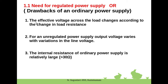To conclude, there are three main drawbacks of an ordinary unregulated power supply: first, the effective voltage across the load changes with changes in load resistance; second, the output voltage varies with variations in the line voltage; third, the internal resistance of an ordinary power supply is relatively large — greater than 30 ohms. A regulated power supply overcomes these drawbacks and maintains a steady 5V output.